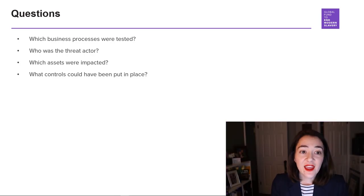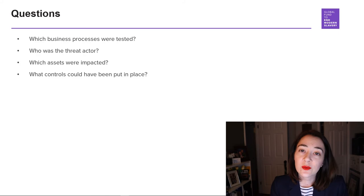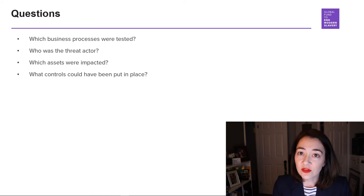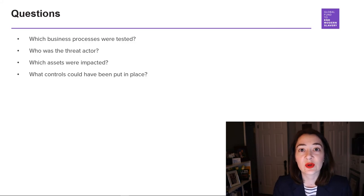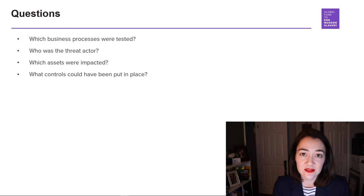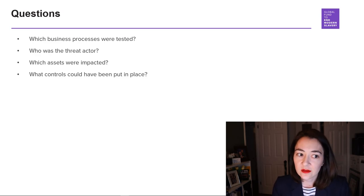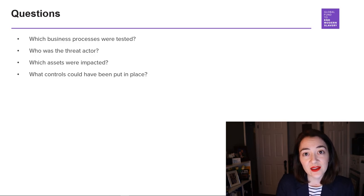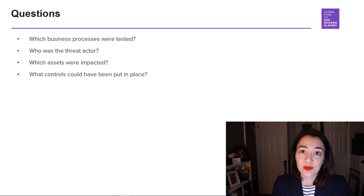Again, I'd like you to consider in this scenario: which business processes were tested? For instance, do you need to designate a person at your organization who's going to take the lead on an incident like this? Who was the threat actor? Which assets were impacted? What controls could have been put in place, and can you start implementing those now?